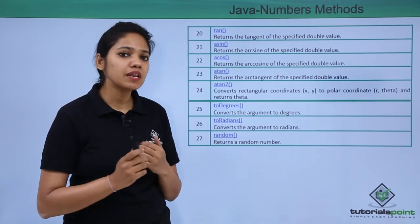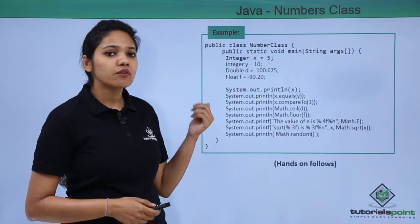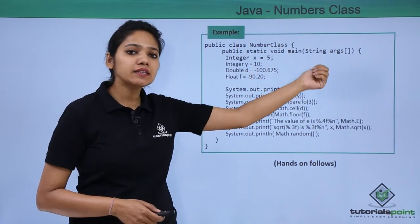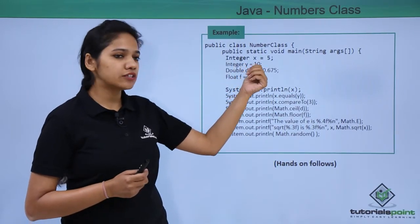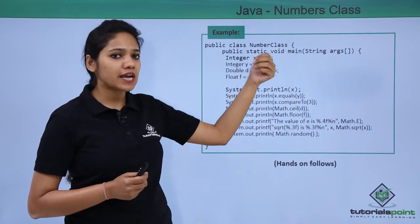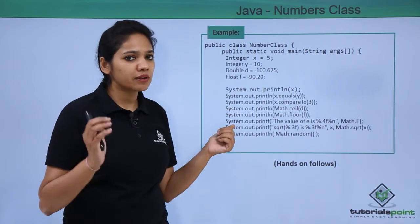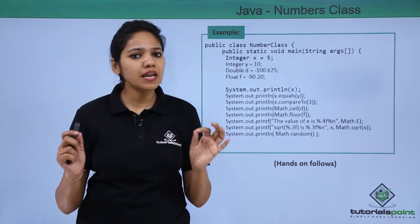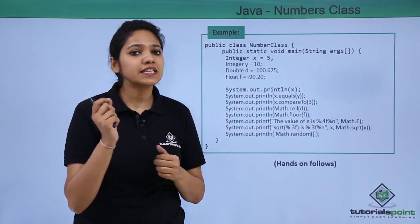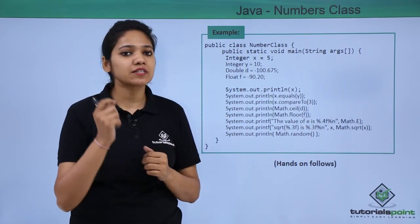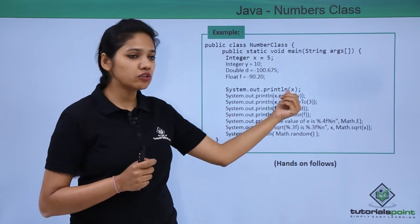Let us see with the help of an example how a number object is created and how it functions. We have created a class called NumberClass, and under the main method we will be running all this. We have created 4 variables: first being of integer type with value 5, then integer y as 10, then double and float. In the first statement, a simple println method, we are trying to display the value of x - this is autoboxing, where you are not writing int x equal to 5 if you know the value. Where you may not know, you store the reference and then print that value.